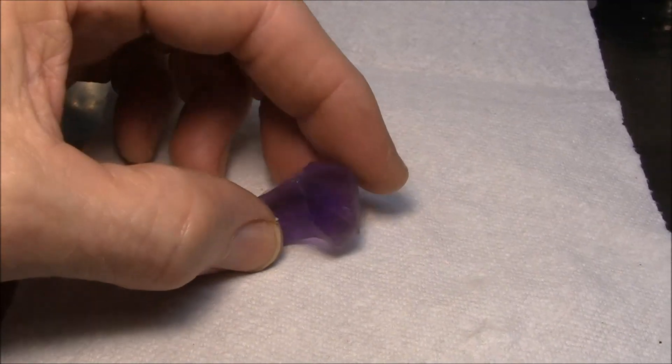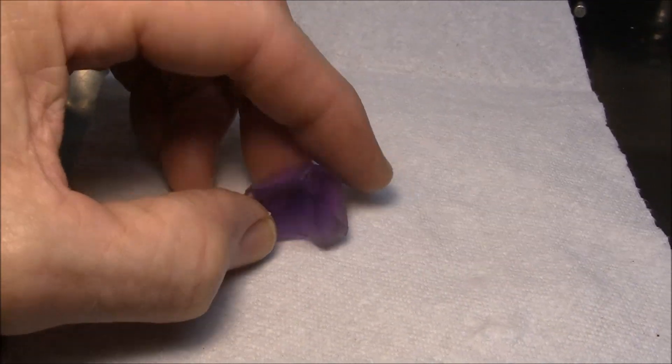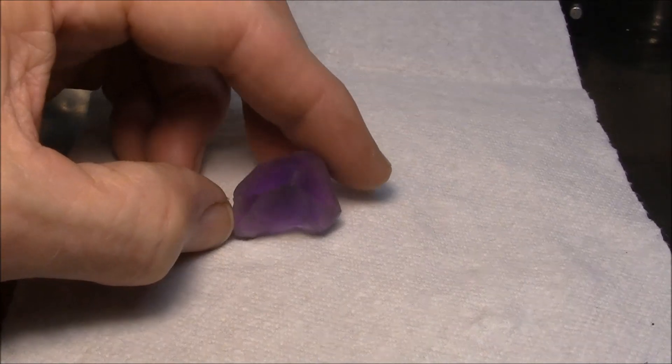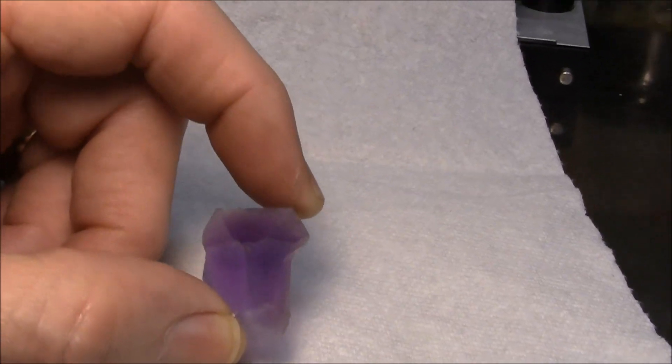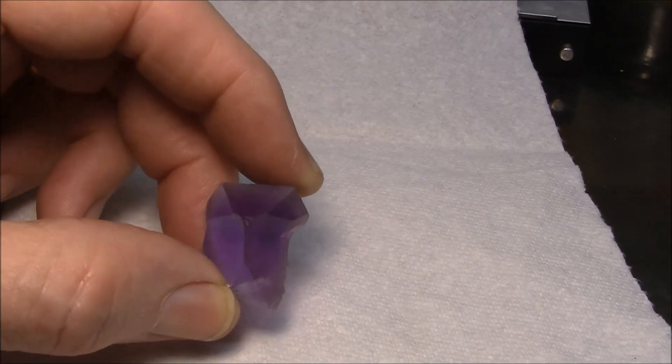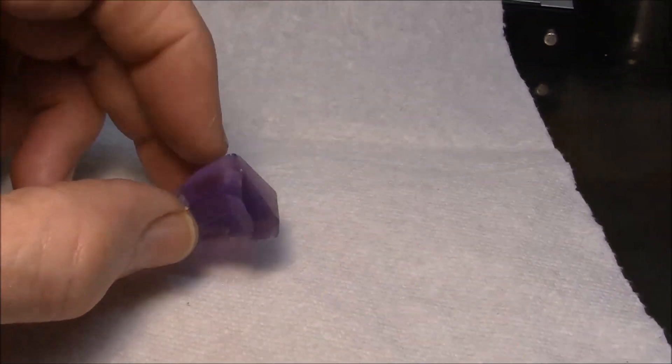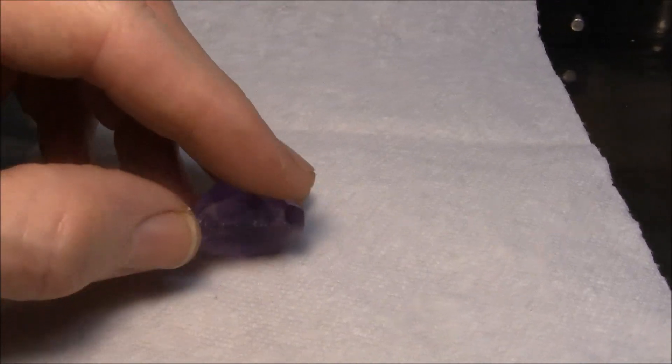Good morning, viewers. I have a piece of amethyst here that I want to cut. It's got a unique shape to it. So I'm trying to figure out how to go about cutting this piece for the maximum yield.